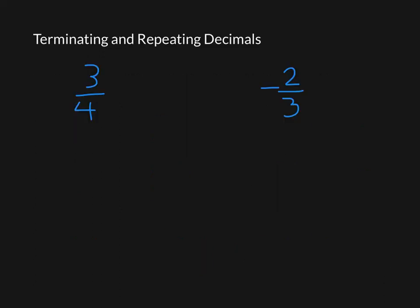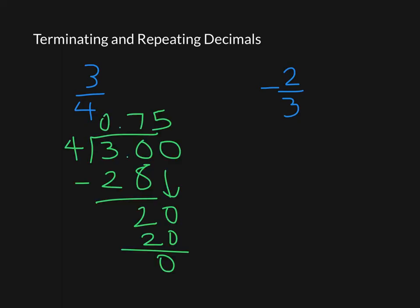So there's two types of decimals when you change a fraction into a decimal. There's repeating decimals and there's terminating decimals. So I'm going to do the division for these and you're going to see what happens. So in this first one, if I add a couple of zeros on after the decimal point, I'm going to end up with 0.75 or 75 hundredths as my answer. So that's a terminating decimal because it ends.